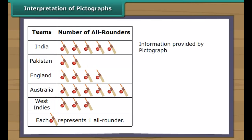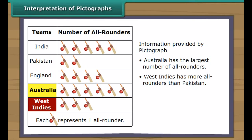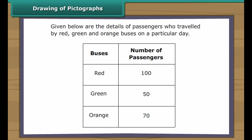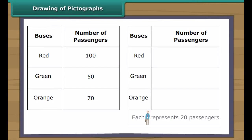Let us interpret one more pictograph. This pictograph shows details of all-rounders in five cricket teams of the world. Each picture represents one all-rounder. Australia has the largest number of all-rounders. West Indies has more all-rounders than Pakistan. Pakistan has the smallest number of all-rounders. India has the second largest number of all-rounders.